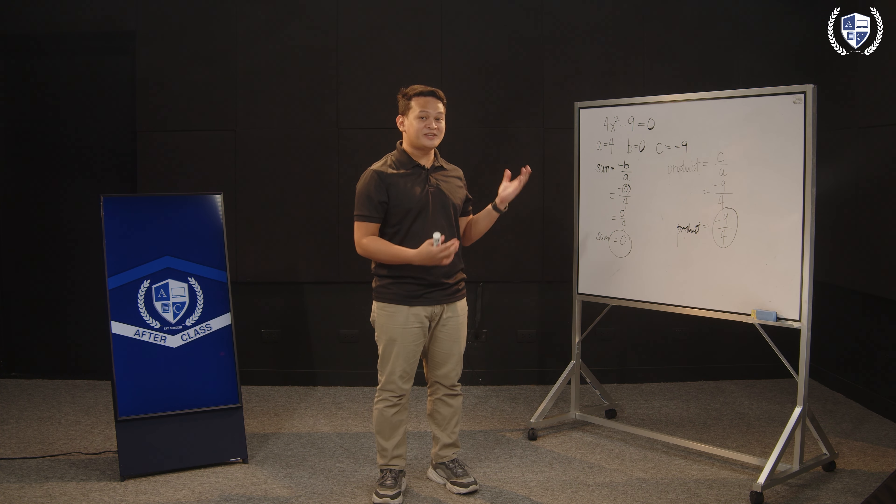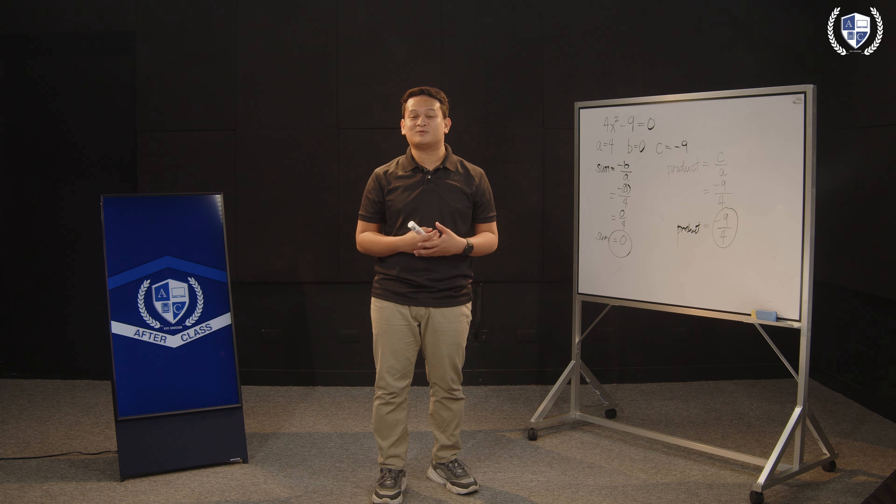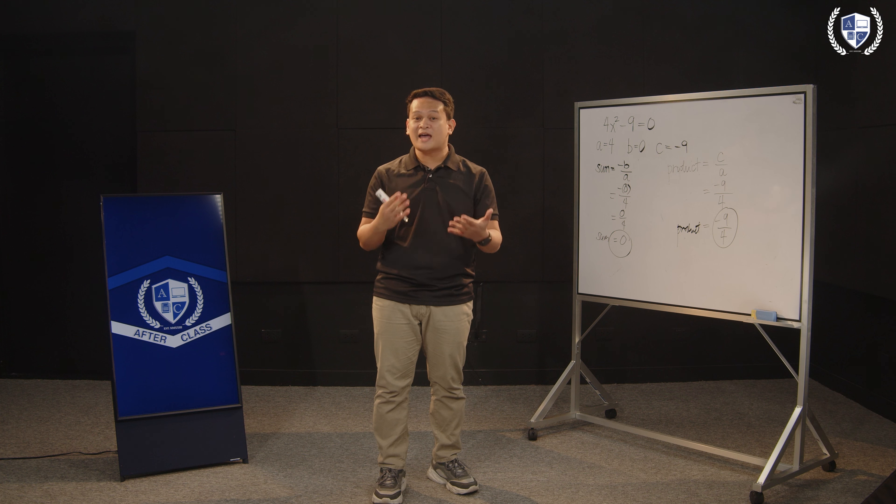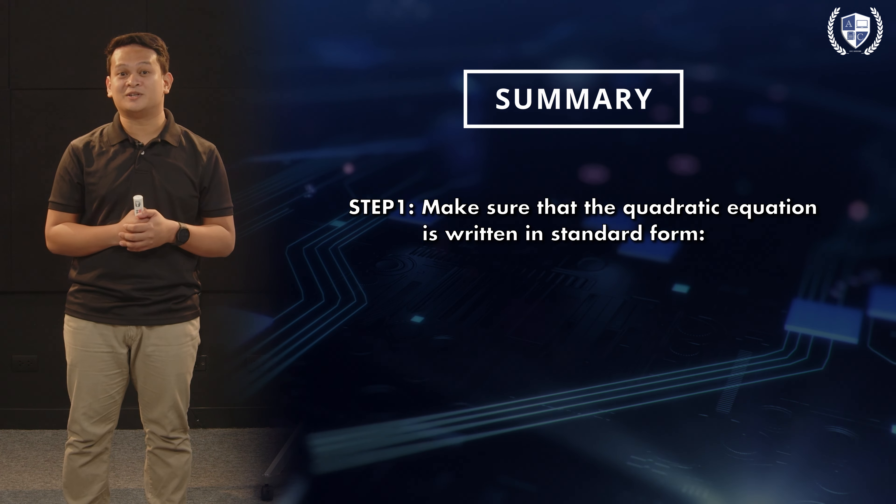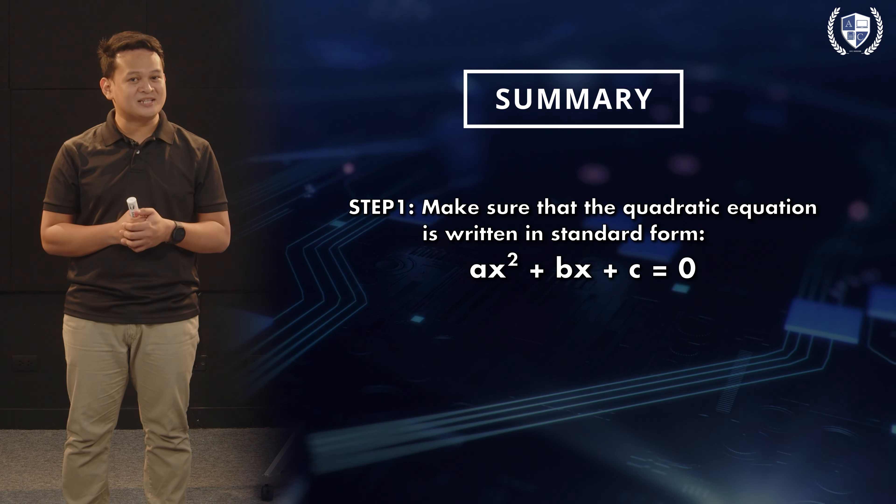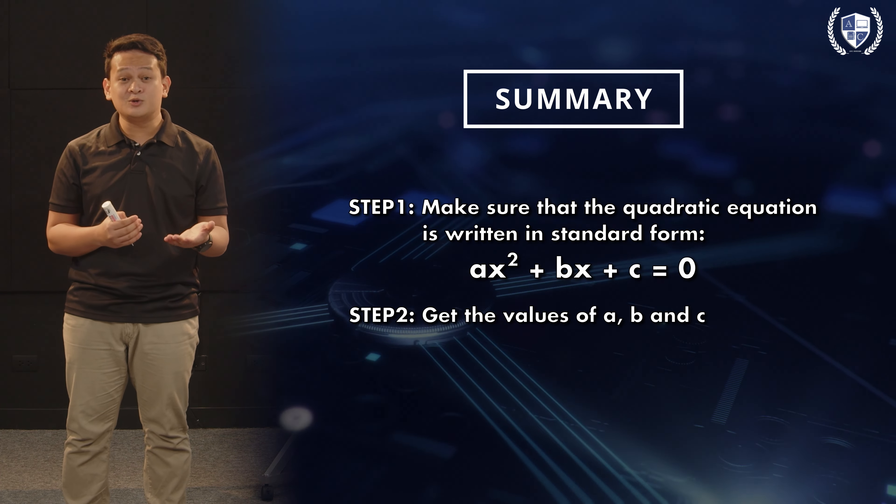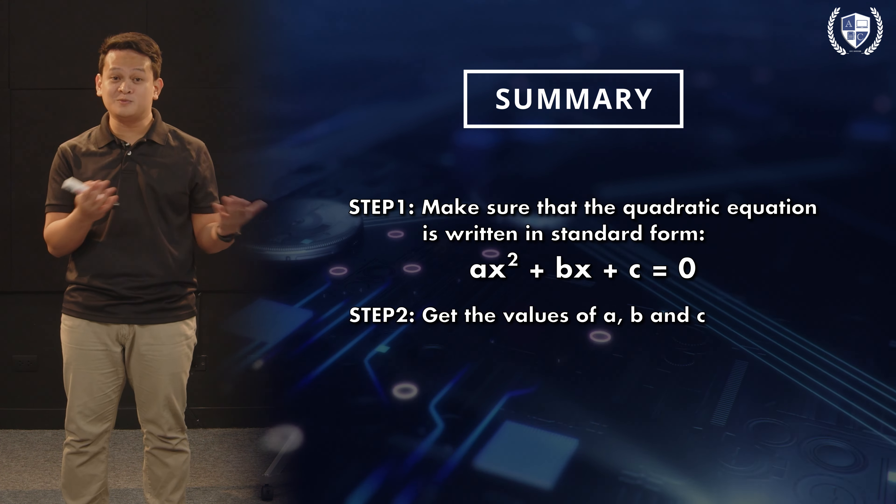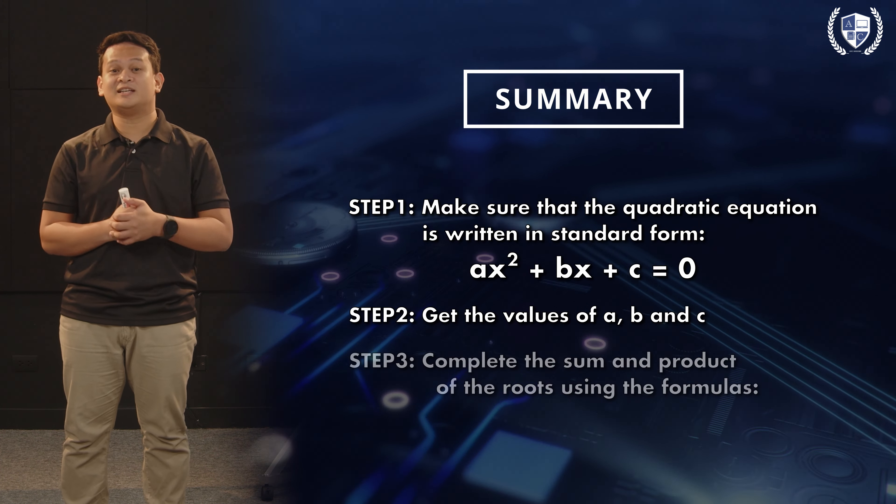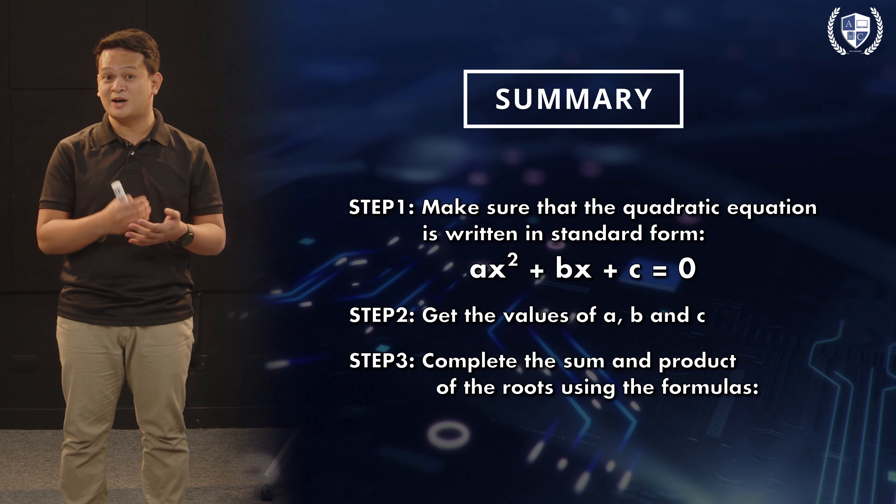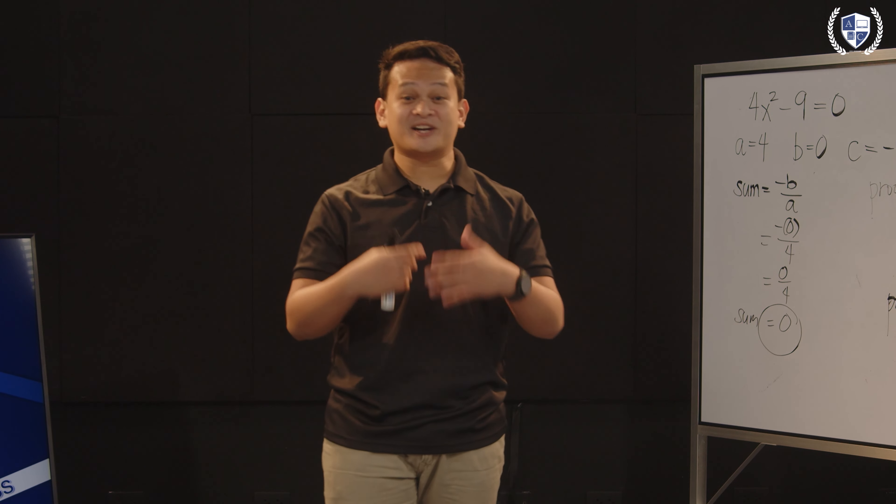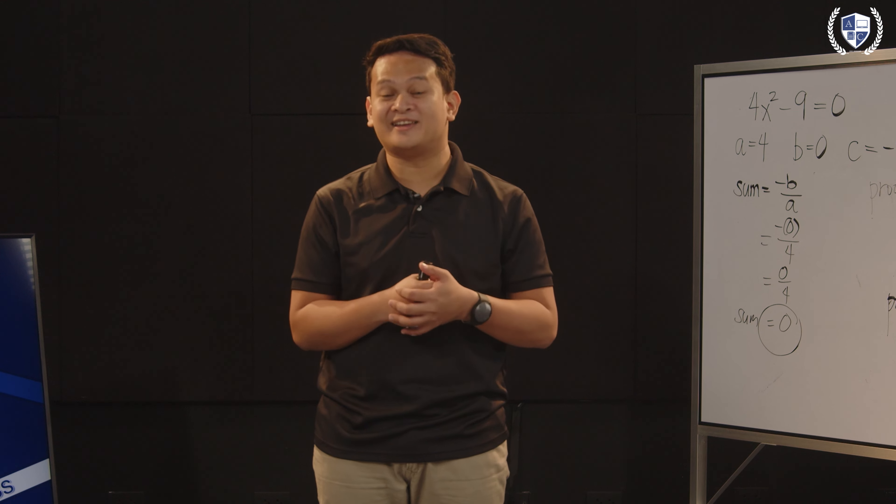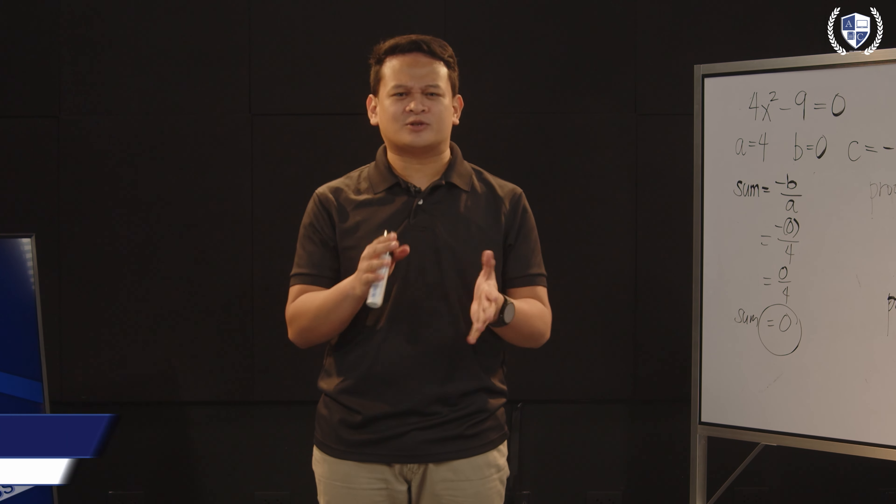So to recap everything na na-discuss natin, ano ba yung naging goal natin? What was our goal? For us to determine the sum and the product of the roots of our quadratic equation without actually solving for its roots. Paano natin gagawin? Let's recall the steps. First one, make sure that your quadratic equation is written in standard form. Dapat, ang itsura niya is AX squared plus BX plus C equals 0. And then, get the values of our A, B, and C. Ano yung values na yun? Yung numerical coefficients ng ating quadratic equation. And last but not the least, gamitin natin yung formula for the sum and product. Sum is given by negative B over A, while the product of the roots is given by the formula C over A. So there you have it. Kaya na natin na kunin yung sum and product ng mga quadratic equations natin without actually solving for its roots.